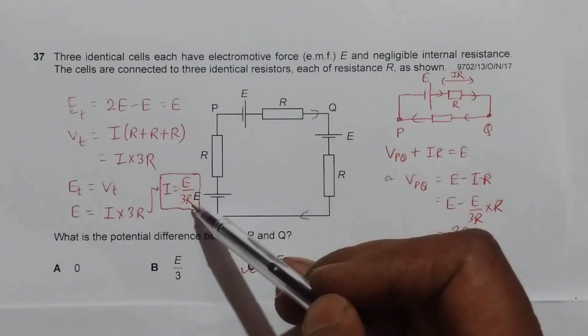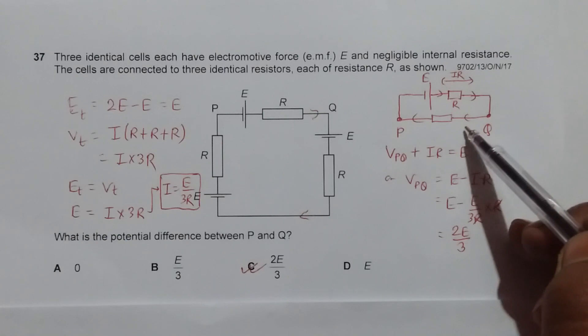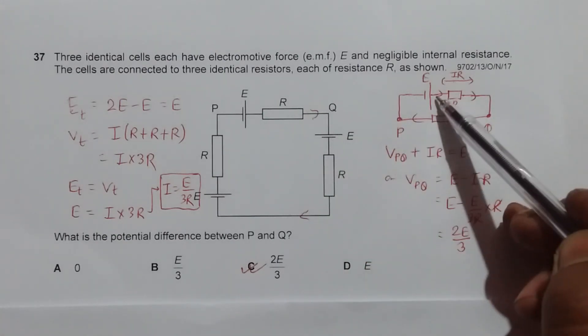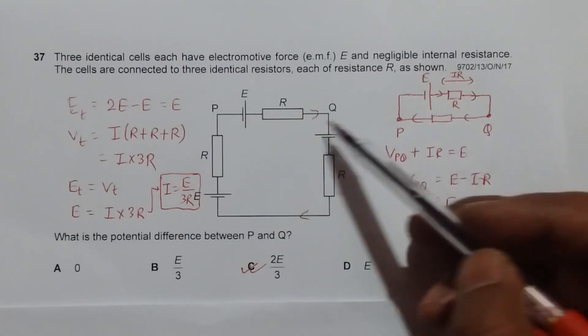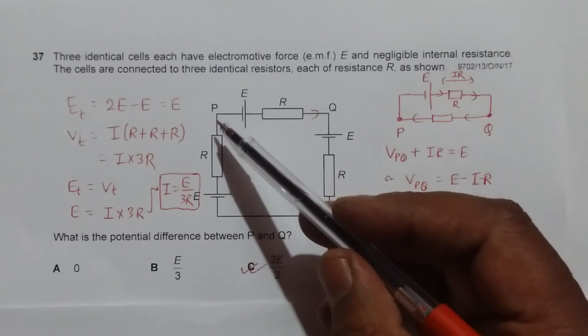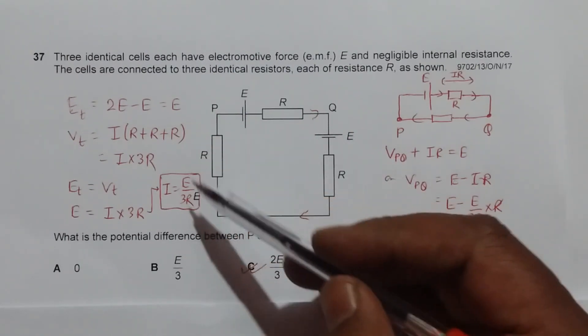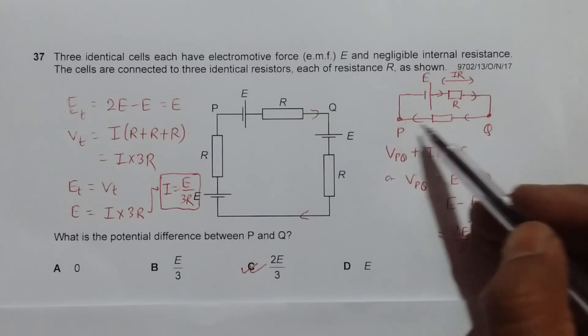Since we have to find the potential difference across VPQ, we can rearrange the whole circuit like this. This E stands for this, this R stands for this, R stands for this, and across the terminal VPQ we have converted the whole of this thing into a simple source of potential difference here. So VPQ is the PD over here.